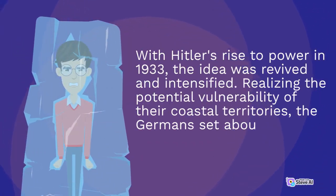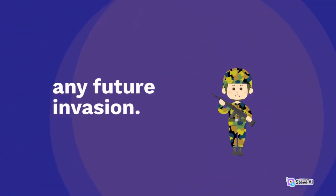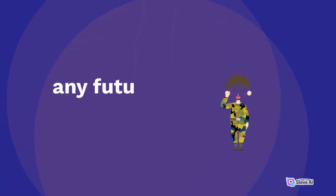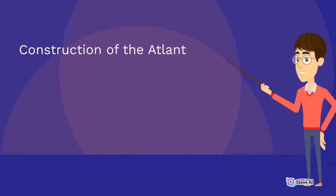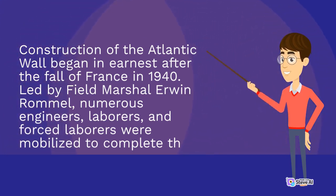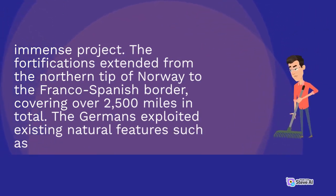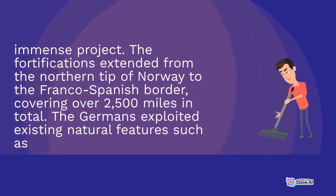With Hitler's rise to power in 1933, the idea of a coastal fortification was revived and intensified. Realizing the potential vulnerability of their coastal territories, the Germans set about building a fortified wall to deter any future invasion. Construction of the Atlantic Wall began in earnest after the fall of France in 1940. Led by Field Marshal Erwin Rommel, numerous engineers, laborers, and forced laborers were mobilized to complete the immense project. The fortifications extended from the northern tip of Norway to the Franco-Spanish border, covering over 2,500 miles in total.